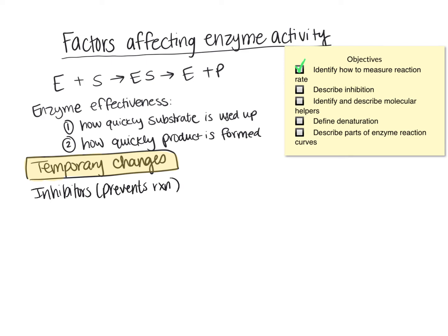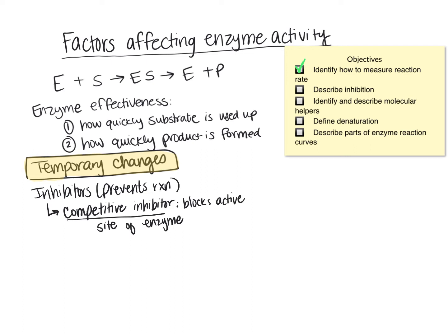The first is called a competitive inhibitor. A competitive inhibitor is going to block the active site. Think of it like a parking space where someone else parks their car in your spot.